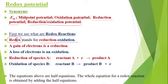Reduction and Oxidation take place simultaneously. Reduction means Gain of Electron. Oxidation means Loss of Electron. So Redox is the combination of these two processes, Reduction and Oxidation.